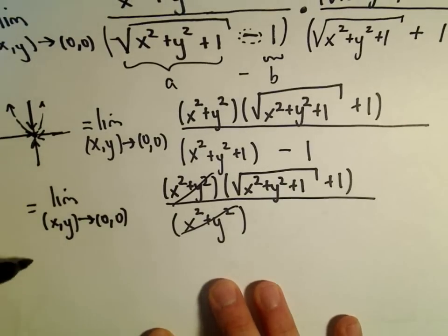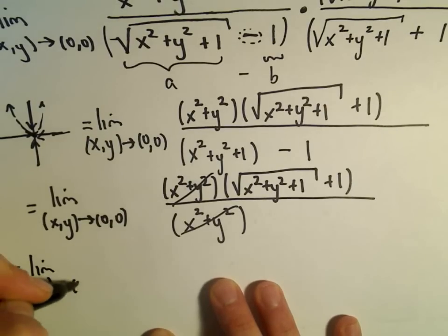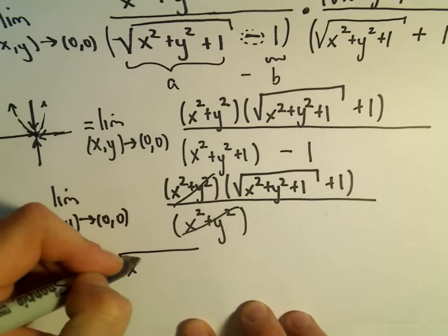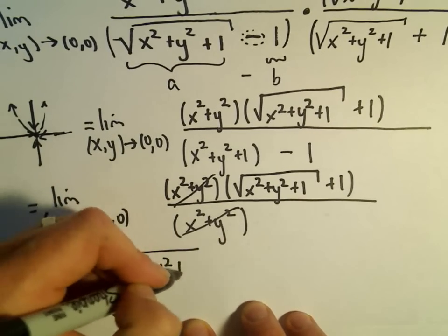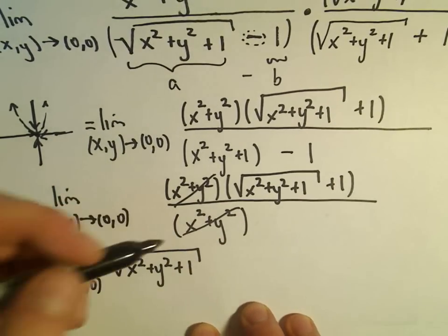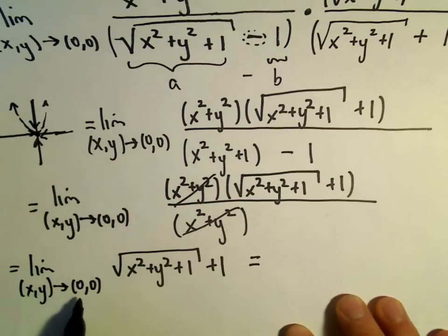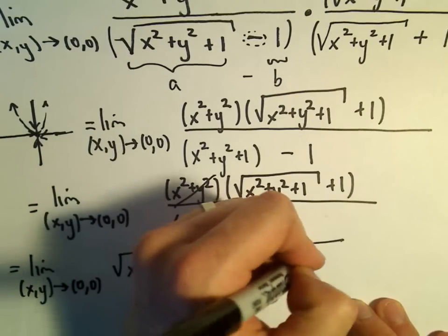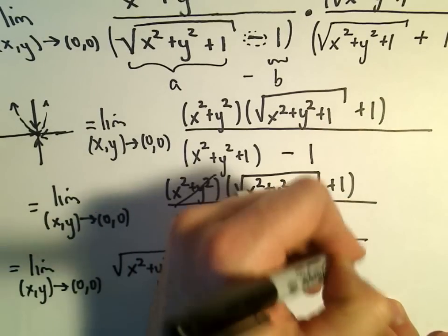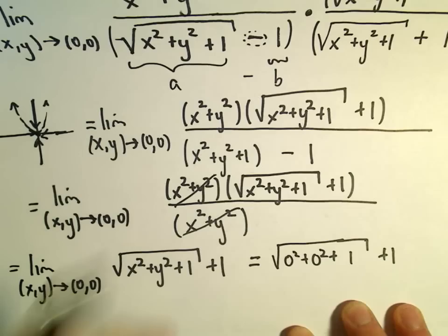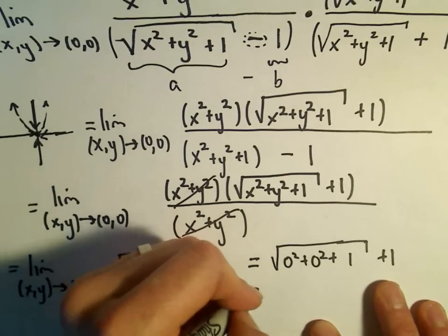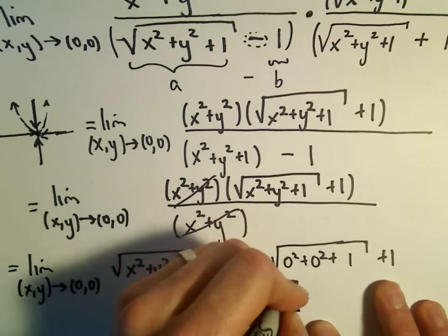And now we're simply left with a limit problem where we can actually plug in the value 0, 0. So we'll just be left with the square root of x squared plus y squared plus 1, plus 1. And now if we plug in 0 for x and 0 for y, we've just got 0 squared plus 0 squared plus 1, plus 1. Well, that's going to be the square root of 1, which is 1 plus 1. And that'll give us 2 as our solution.